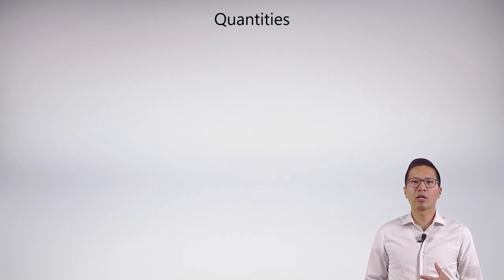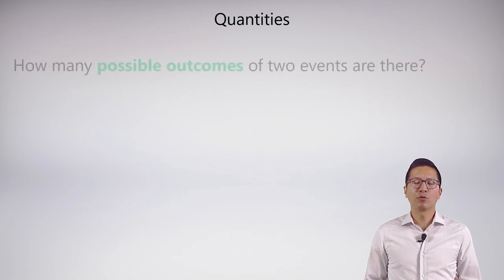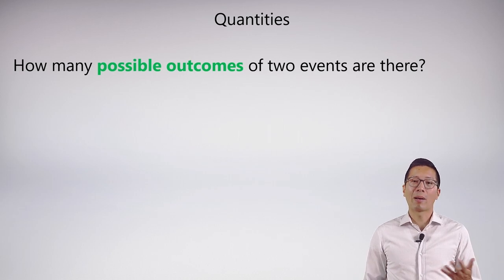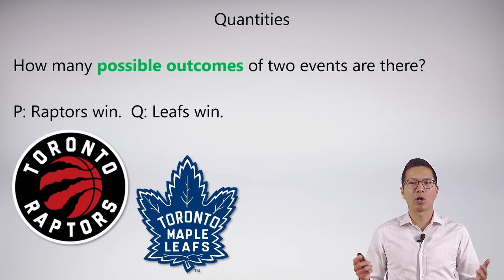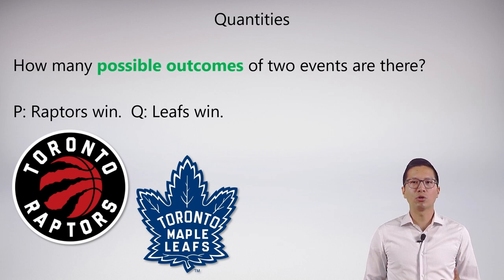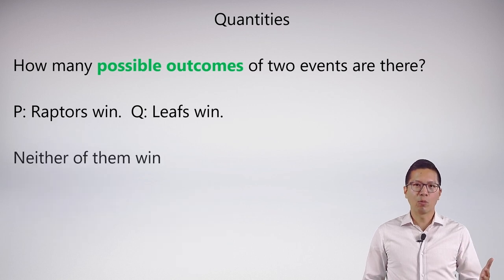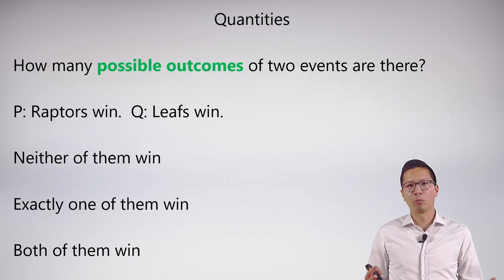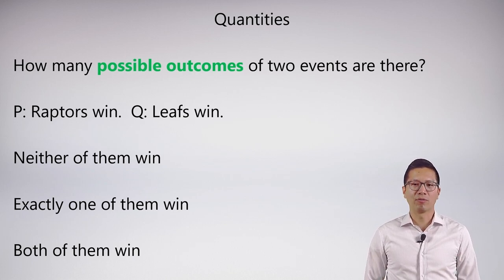By quantities, we're typically talking about the possible outcomes of a collection of events. So if I have two events, how many possible outcomes are there? Here's an example: the Raptors win or the Leafs win — pretend we're talking about any given night. The possible outcomes are: neither of them win, exactly one of them wins, or both of them win.